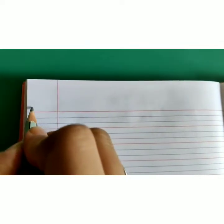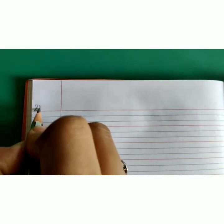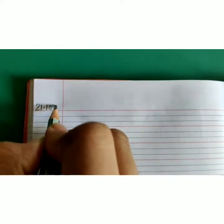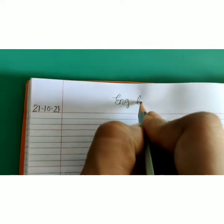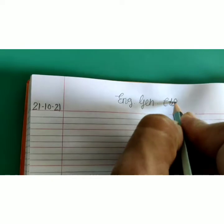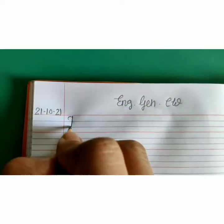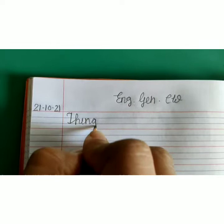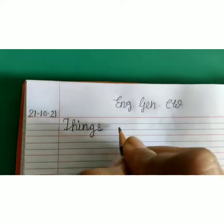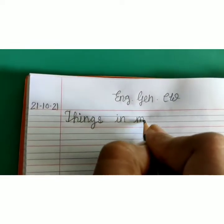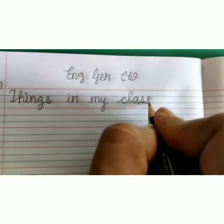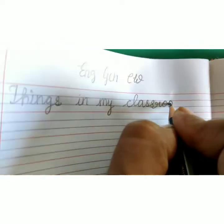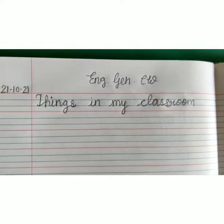Today's classwork is things in my classroom. Open your notebook and write down today's date in the margin: 21-10-21, at the top right here. Near the margin, write down the heading: Things in my classroom.